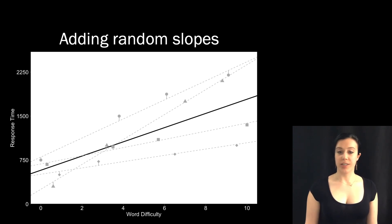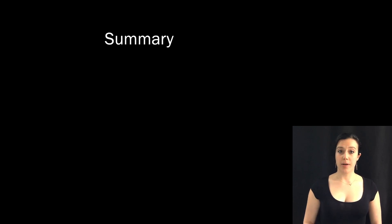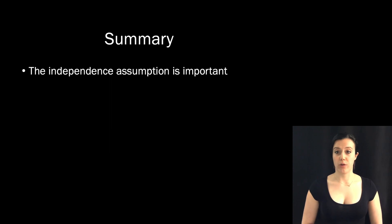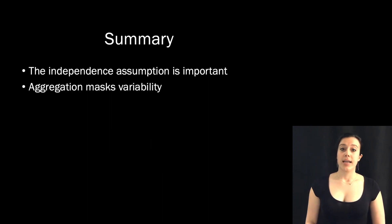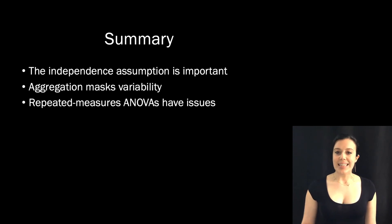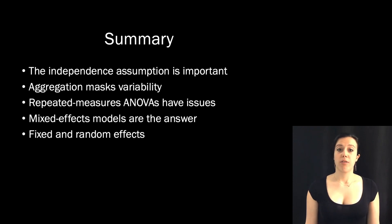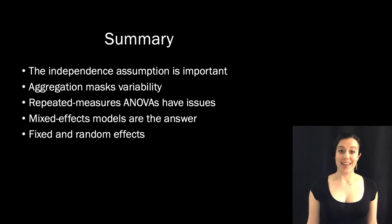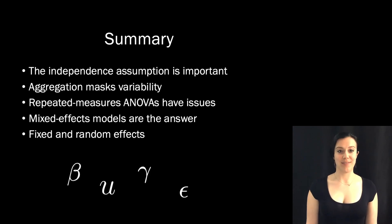That is a lot of information to take in, so we're going to stop there for today. To summarize: the independence assumption is a really important one in regression, and anytime you have multiple observations within some group or cluster, you're violating it if you ignore those dependencies. You could aggregate across levels of some grouping factor — which is typically what you need to do to run an ANOVA — but then you're giving your model way less information, so it's going to underestimate variability and increase your type 1 error rate. Repeated measures ANOVAs can handle some experimental designs, but there are limitations. Mixed effects models address those shortcomings through fixed effects, which represent population-level average trends, and random effects, which represent cluster-level trends. I'll see you next time when we get into some of the math, and my good friends beta, u, gamma, and epsilon will be heavily featured. Bye!